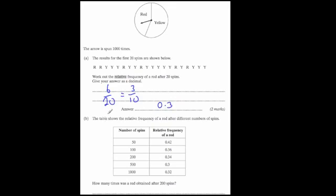The next question then says, the relative frequency of a red after different numbers of spins are showing. So we've got 50, 100 spins, 200 spins, 500 spins, and 1,000 spins. It says, how many times was a red obtained after 200 spins? So what we do is we take the probability, and we times by the number of trials. So we've got the probability, which is equal to 0.34. And we're going to times that by the number of trials, which is 200, and see how many we would expect. So whenever we do that, that's equal to 68. So red was obtained 68 times. So it's just like expectation or expected outcomes like before, where we just times the probability by the number of times you do it. So it's 0.34 times 200, and then that's equal to 68 reds.